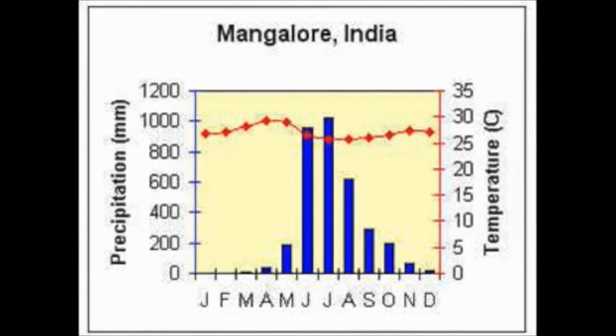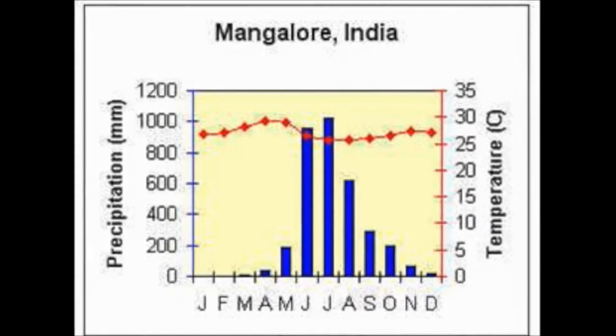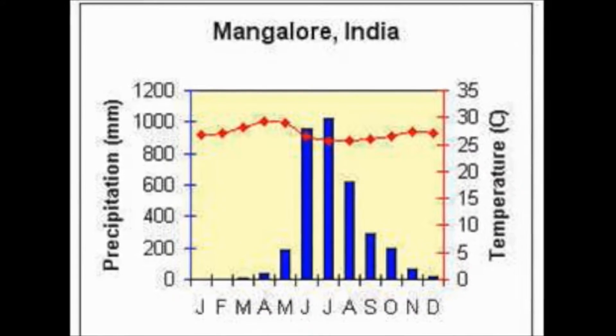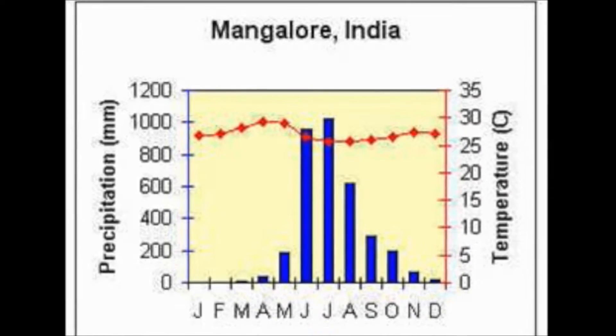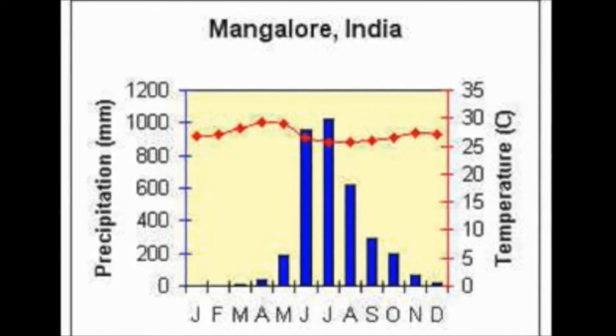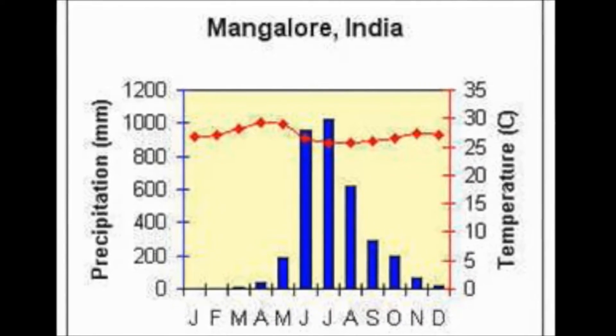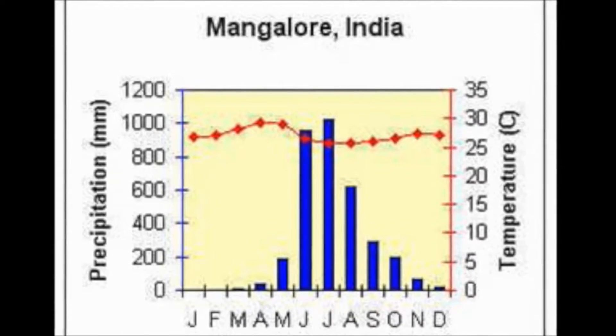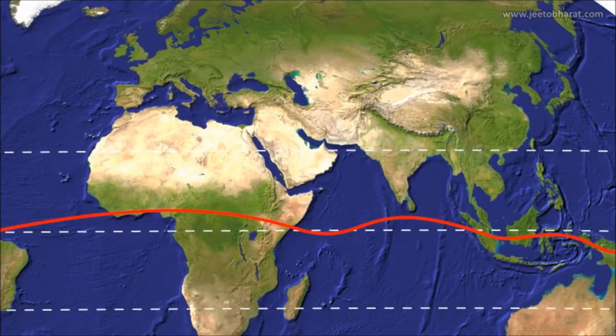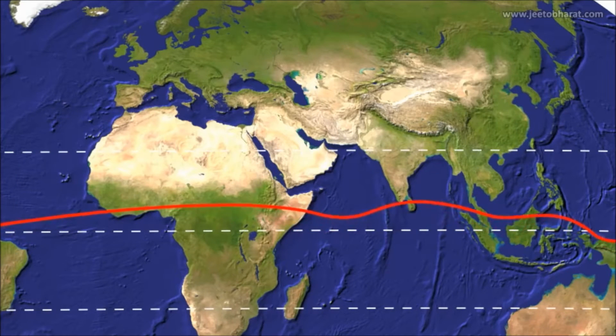Tropical deciduous forests experience 80–90% humidity throughout much of the year, and the average temperature is 30 degrees Celsius year-round. One of the most defining characteristics of monsoonal forests is their seasonality.